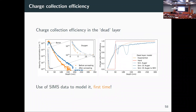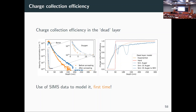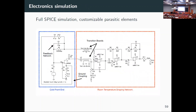The 'dead layer' is typically the entrance window where any deposited energy is assumed not to be collected. In reality it's more complicated — some charge always makes it out by diffusion. Using the SIMS data to build a physics model, we find it's a much more gradual transition from zero to full charge collection over a length scale of roughly 100 to 200 nanometers rather than a sharp cutoff. If a particle only travels 150 nanometers, that's a pretty big difference for us.